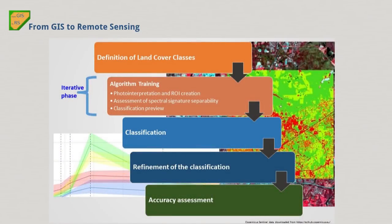Let's start with a brief description of the land cover classification steps: from the definition of land cover classes, to the iterative phase of algorithm training with the creation of ROIs (regions of interest) with photo interpretation, the assessment of spectral signature separability and the classification preview, then the classification of the whole image, the refinement of the classification, and the accuracy assessment.